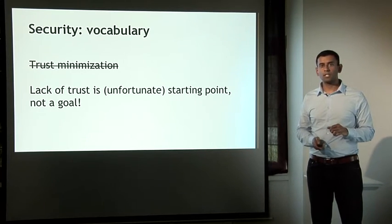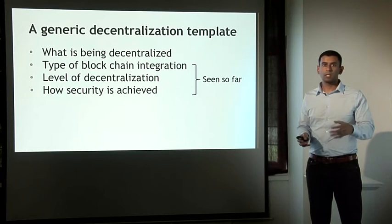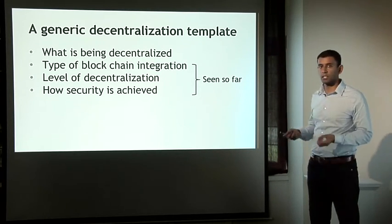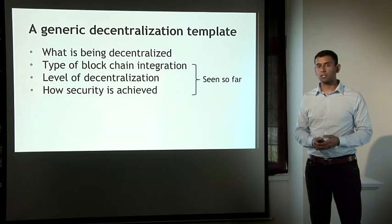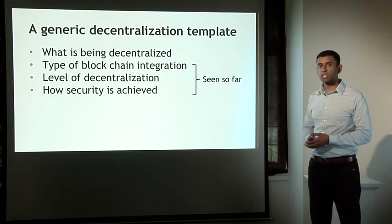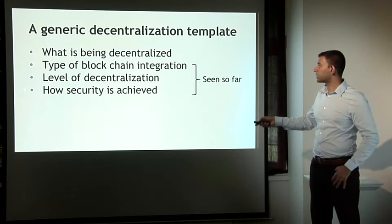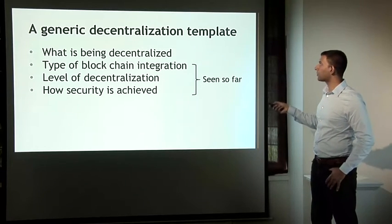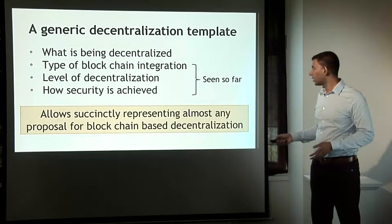Let's summarize what we've seen. In terms of decentralization, we want to ask: what is being decentralized, what type of blockchain integration is used, what level of decentralization is achieved, and what security mechanisms are used. We talked about four types of blockchain integration: directly on blockchain, embedding, sidechains, and a totally different alternative chain. We talked about levels of decentralization on a spectrum from completely disintermediated to completely centralized. And we talked about different ways of enhancing security. Asking these four questions gives you a powerful and generic decentralization template that can be used to understand almost any blockchain-based decentralization proposal.